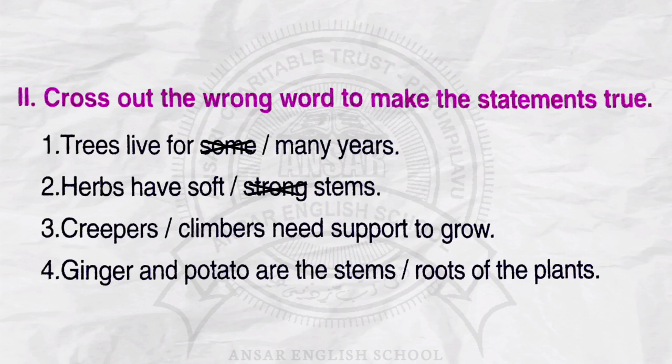Number 3. Creepers or climbers need support to grow — cross the word 'creepers.' Number 4. Ginger and potato are the stems or roots of the plants — cross the word 'roots.'